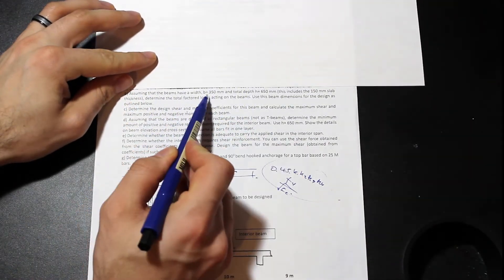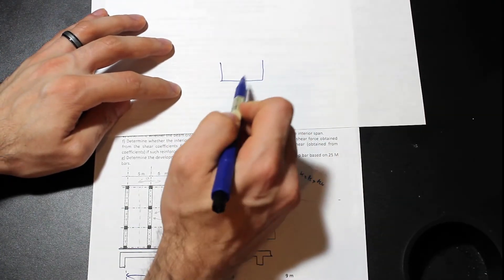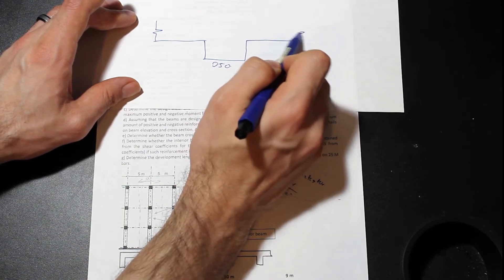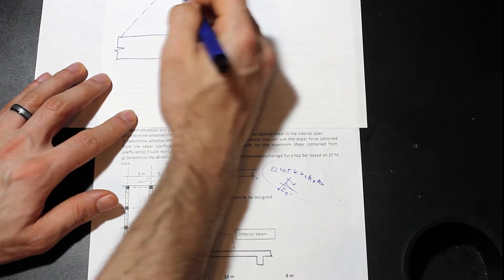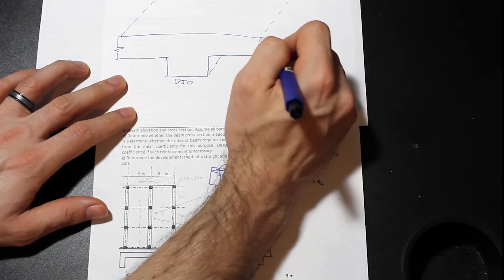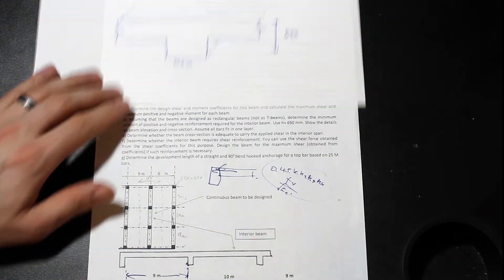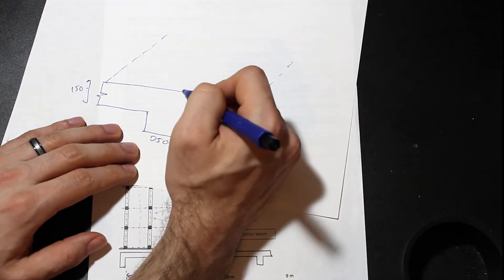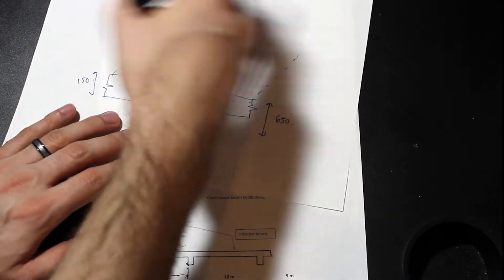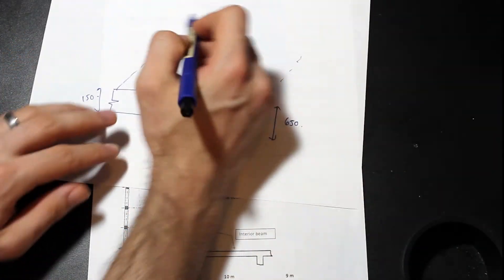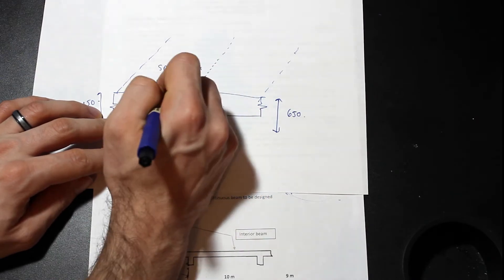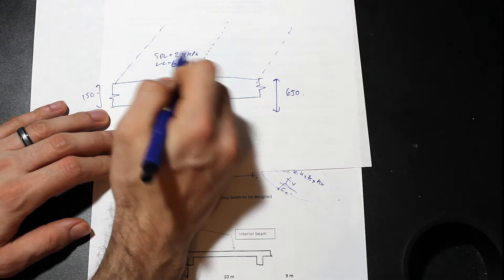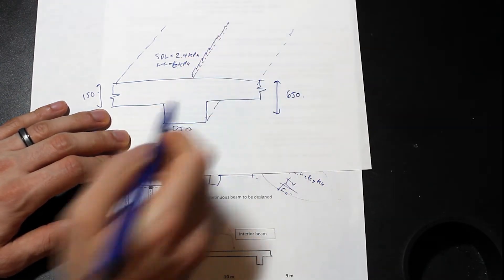And you'll see, actually, in the later questions, there's even more stuff like that. So that's the first step. B, assuming that the beams have a width of B equals 350 and a total depth of H equals 650, and that includes the slab, determine the factored load. So this was actually kind of tricky, and maybe we can draw a sketch here. So as you can see, so the beams have a width of 350. So let's draw the beam first, right? So we have the beams of 350 width here. Okay, the 650 includes the slab. And there's our slab there. Okay. And let's just assume that the slab is kind of three-dimensional here. And the total depth, including the slab, is 650. Okay. So that's good. And the slab is 150. Okay.